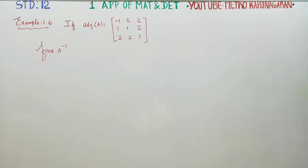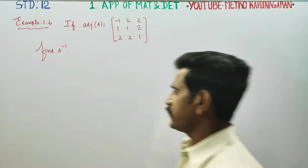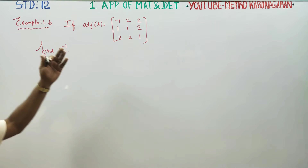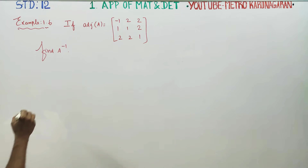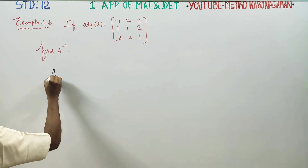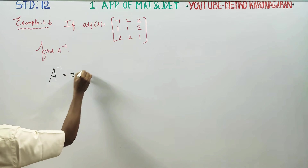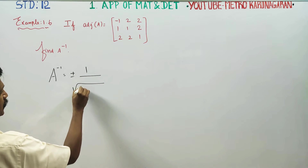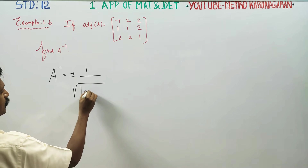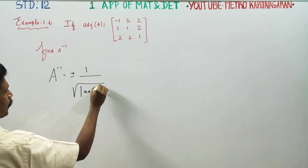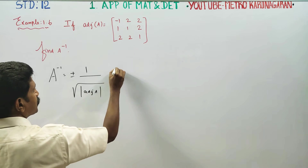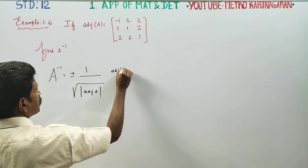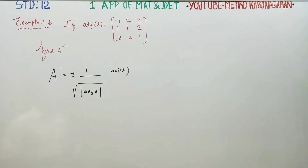Dear Tool Standard students, in Example 1.6, you have to find the A-inverse. It is given adjoint A. A-inverse is a formula: plus or minus 1 by square root of determinant of adjoint A, into adjoint A. This is the formula for A-inverse.